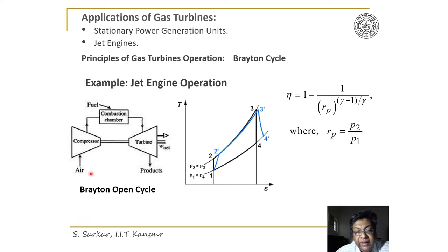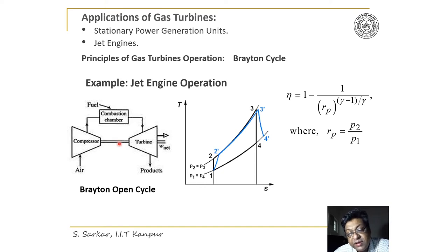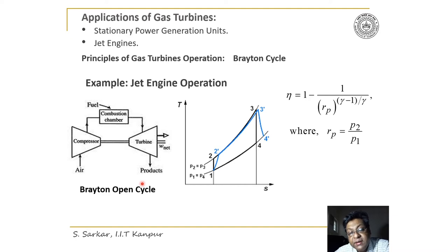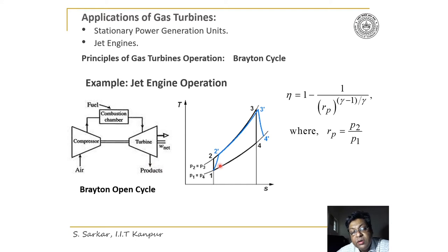Air is sucked by the compressor and it is compressed, then pushed to the combustion chamber where combustion occurs at constant pressure. It is then expanded in the turbine, producing work output. That work output is sufficient to run the compressor. The remaining pressurized gas is exhausted through a nozzle to produce a jet, in case of a jet engine.